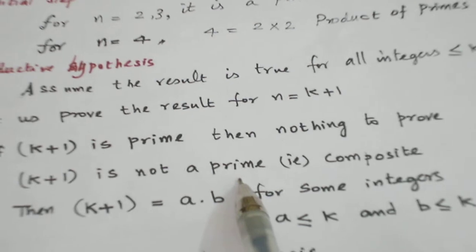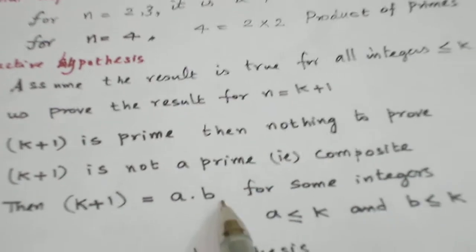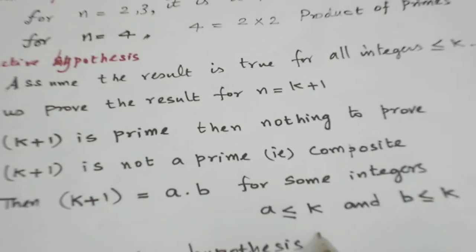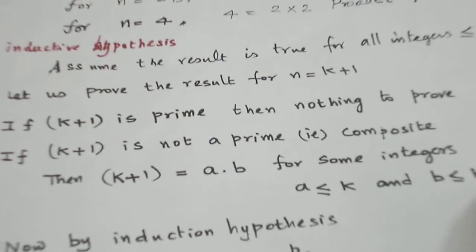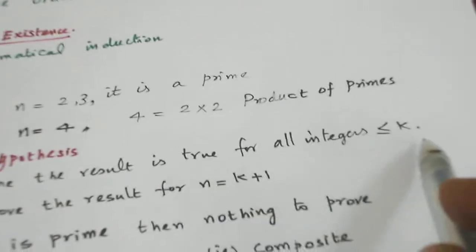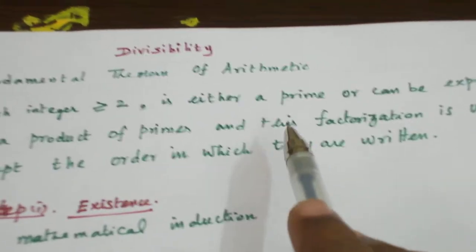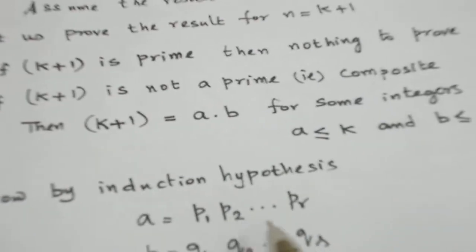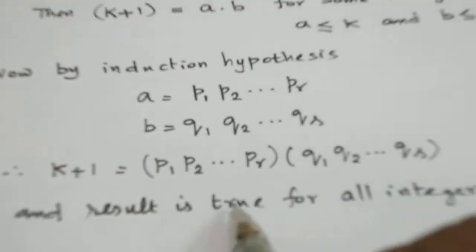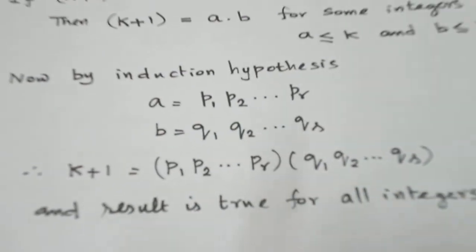Suppose it is not a prime number — if it is a composite number, then it can be written as a product of two integers a × b, where a ≤ k and b ≤ k. Now by the induction hypothesis, what we assumed is that for all integers less than or equal to k, each is either a prime number or can be written as a product of primes. So a is written as a product of primes and b is written as a product of primes. So a × b, that is k + 1, is also written as a product of primes. So we have proved k + 1 is either a prime or, if it is not a prime, it can be written as a product of primes.